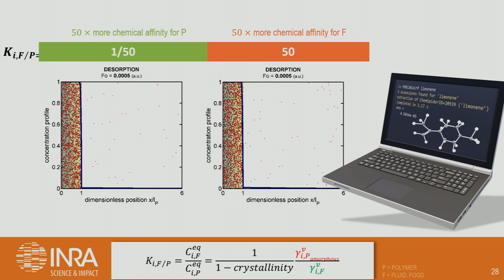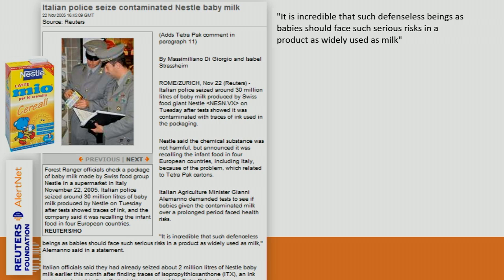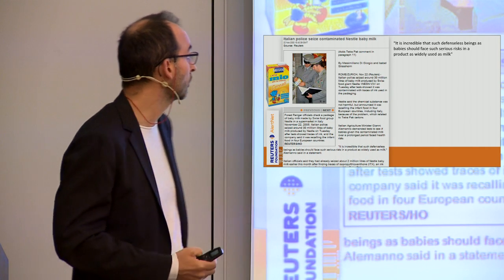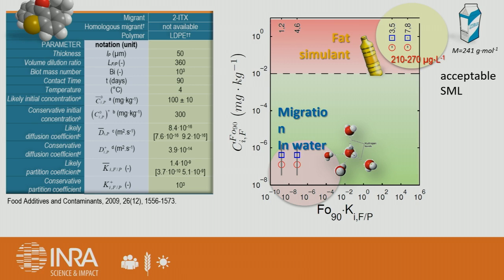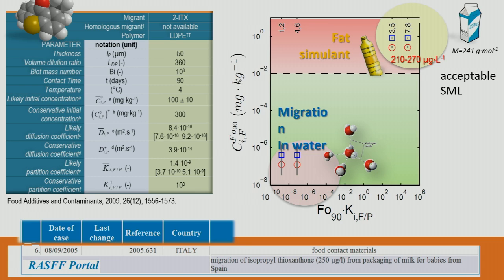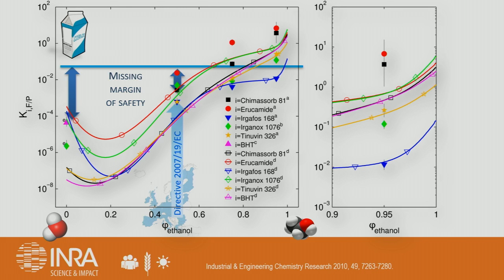The key is to be able to predict this chemical affinity. I think most of you know the major crisis of isopropylthioxanthone (ITX) in 2005 — a well-documented contamination from printing inks caused by putting the inner liner in contact with the external part of the film. Something not well known is that the tests carried out by the packaging industry were done with water, and we were able to demonstrate with modeling that the contamination levels observed by enforcement laboratories could only have been predicted using modeling. This was published in 2009.